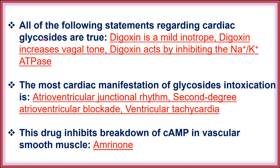All of the following statements regarding cardiac glycosides are true: digoxin is a mild inotrope, digoxin increases vagal tone, and digoxin acts by inhibiting sodium-potassium ATPase activity.